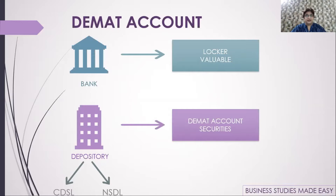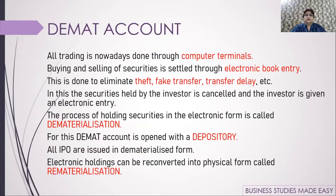Now, the DMAT account. Just as you keep valuables like jewelry in a bank locker, when you buy shares or securities you keep them in a DMAT account. The DMAT account is like a locker, held with a depository. India has only two depositories — CDSL and NSDL — which hold the DMAT accounts of millions of shareholders. Securities in electronic form are kept in the DMAT account with the depository.